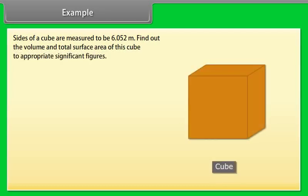Example. Let us take an example of significant figure. Sides of a cube are measured to be 6.052 meter. Find out the volume and total surface area of this cube to appropriate significant figures. Let us see the solution.